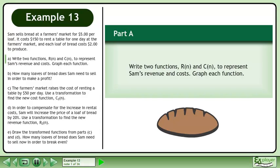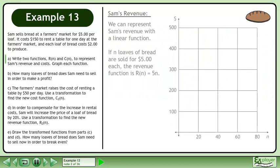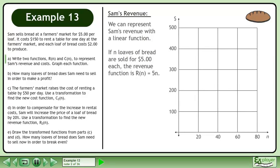In part A, we'll write two functions, R and C, to represent Sam's revenue and costs. Graph each function. We can represent Sam's revenue with a linear function. If n loaves of bread are sold for $5 each, the revenue function is R equals 5n.